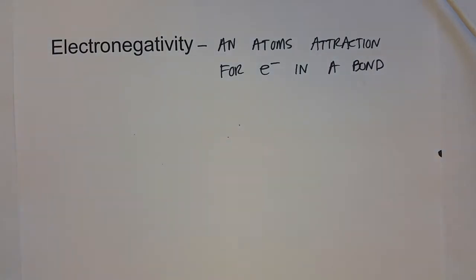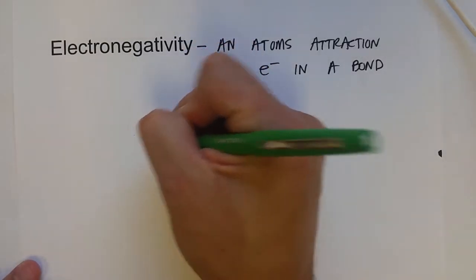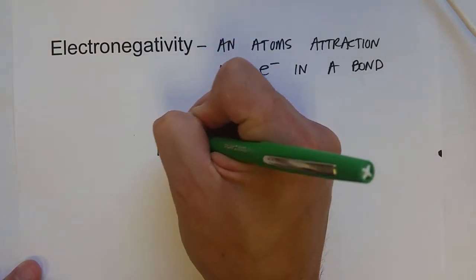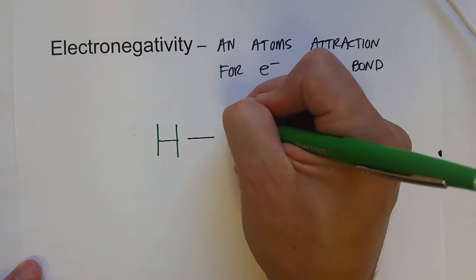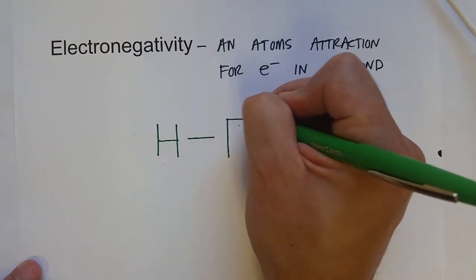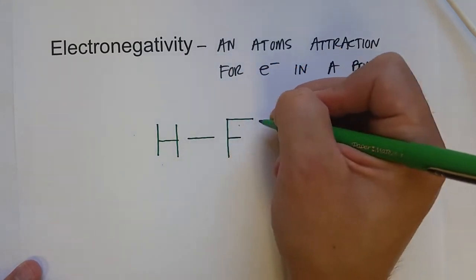And so what that has an effect on is if you have a bond between two atoms with different electronegativities. So let's say hydrogen fluoride, or HF.